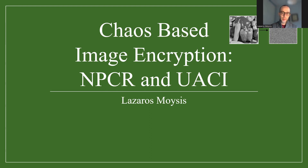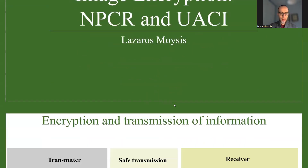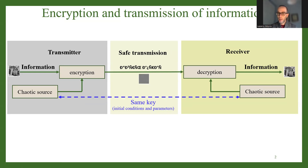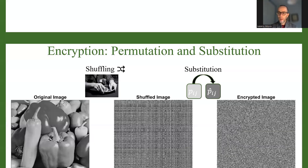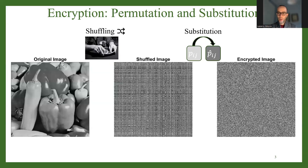We're continuing our videos on chaos-based image encryption, and the topic of today's video is NPCR and UACI tests. We're talking about symmetric encryption, where the transmitter and receiver both use the same chaotic system with the same configurations — initial conditions and parameters. The classic operations are permutation and substitution: shuffling the pixels to disperse information throughout the plaintext, then substituting each pixel with a different value to completely hide the information.